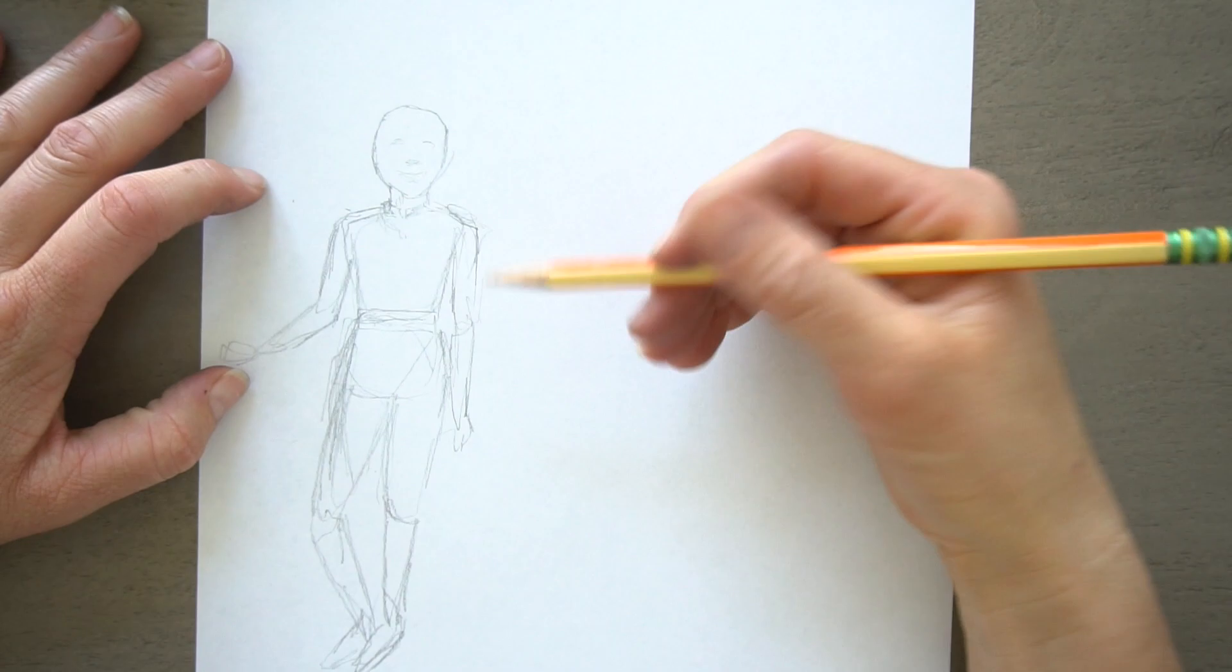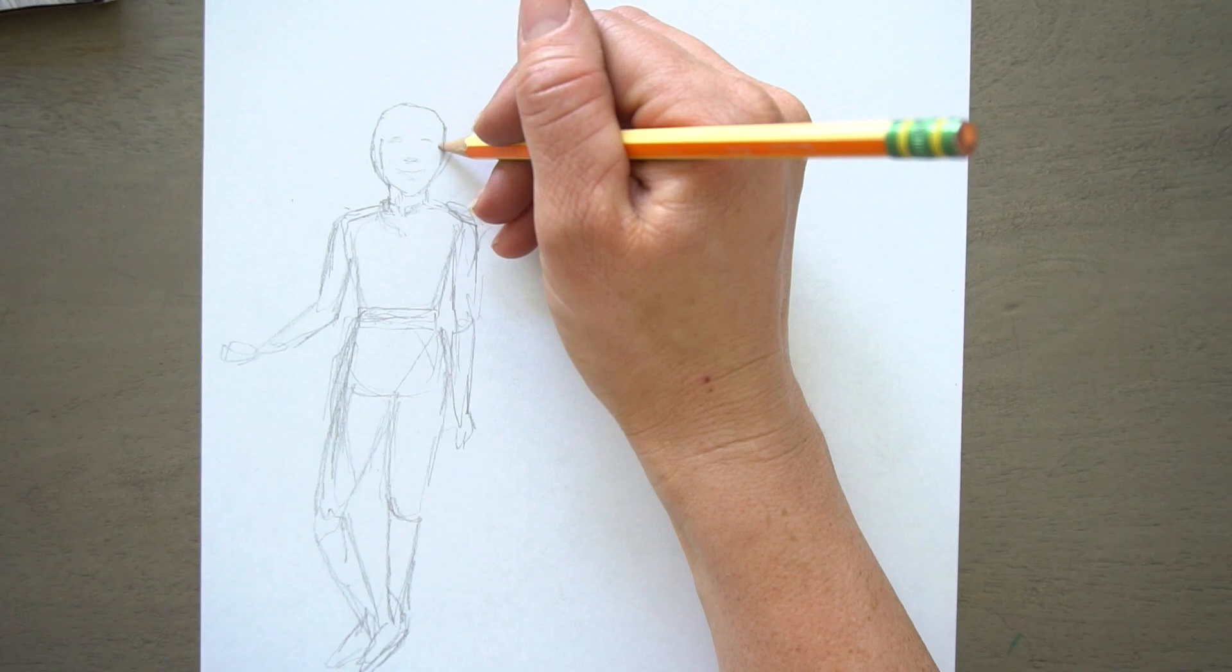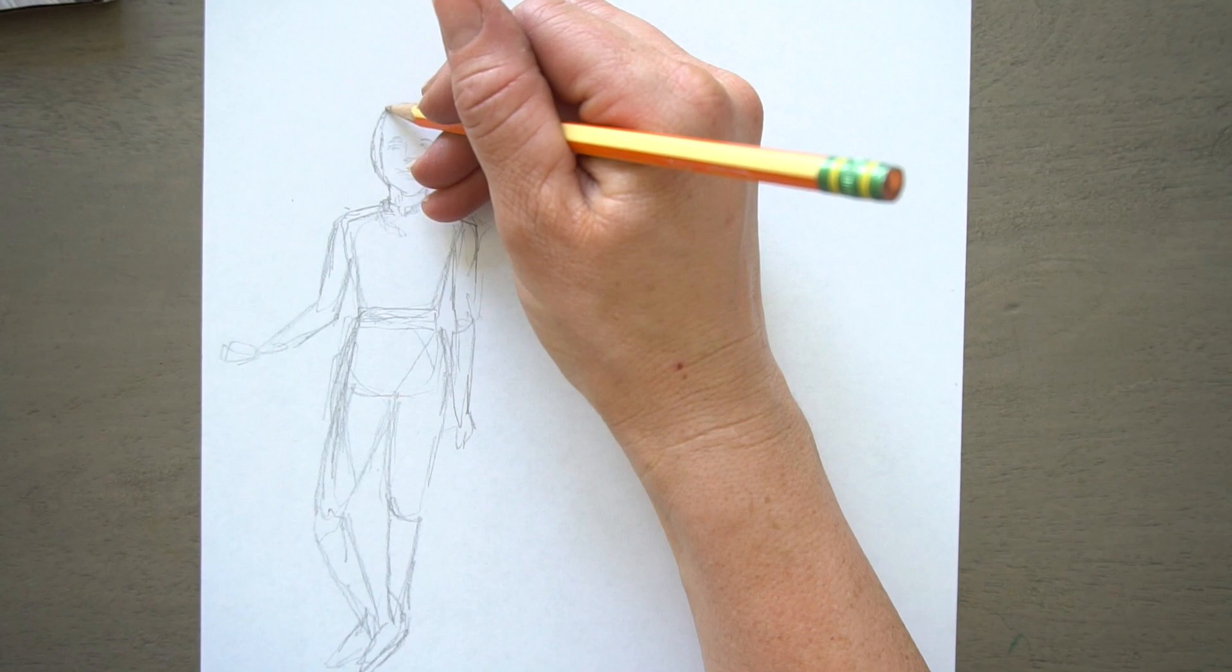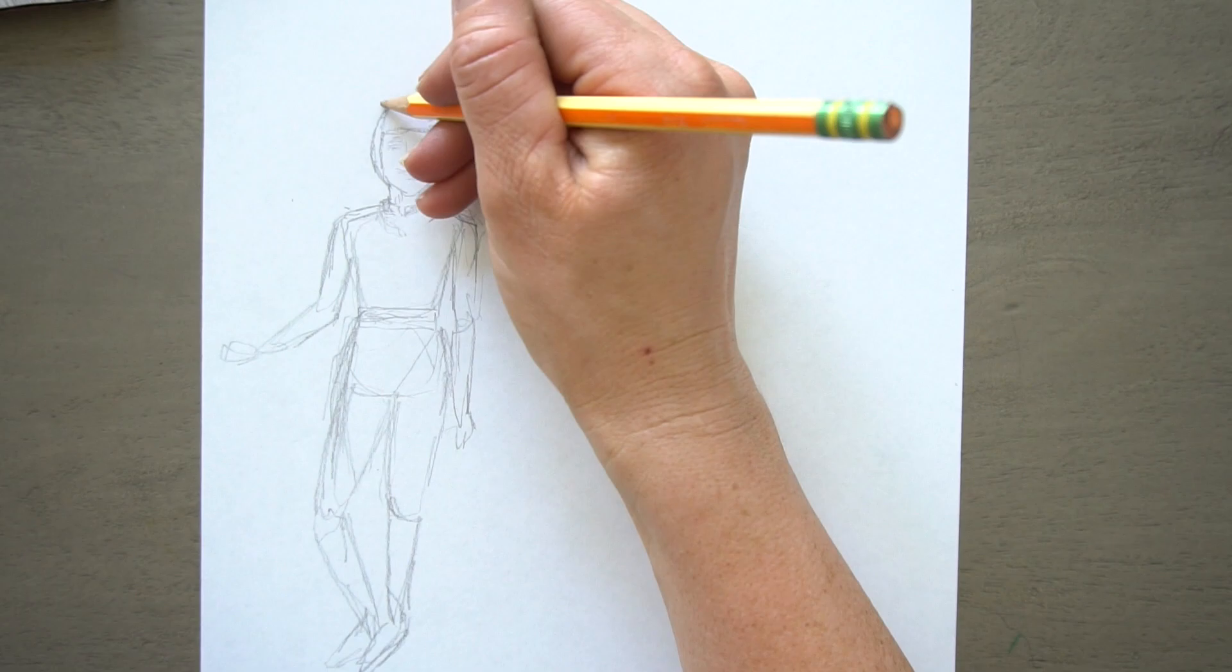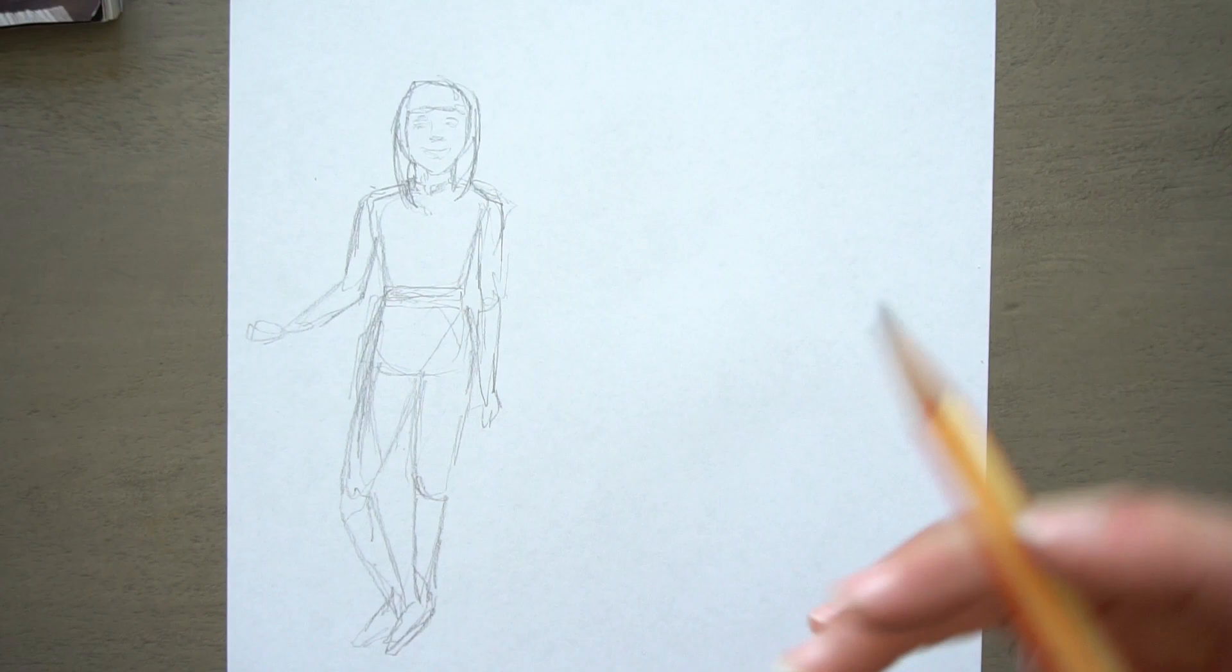The second tip is use some gesture drawings to warm up. So that's going to get you used to looking at the figure, looking for the figure, and it's going to make figure drawing a lot easier because you're already in that looking zone or habit by the time you start. And then it's just going to be a lot easier to draw some of those other things in.